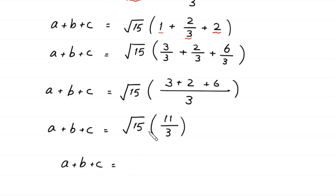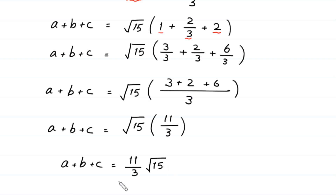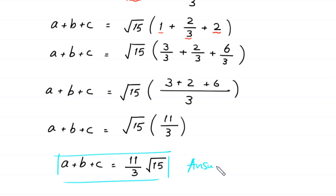This expression can be written as 11 over 3 times √15. This is the value of a plus b plus c, and this is the final answer.